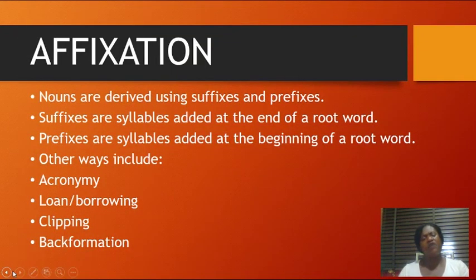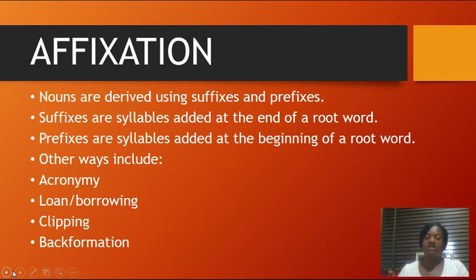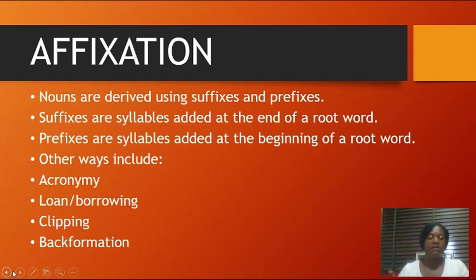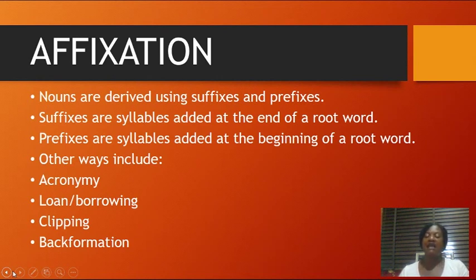There are different ways we form words. One such way is affixation. Affixation entails three things: we have the infix, suffix, and prefix. In today's topic we'll only be looking at two aspects of affixation — the suffix and the prefix — and other ways of deriving or forming new words.